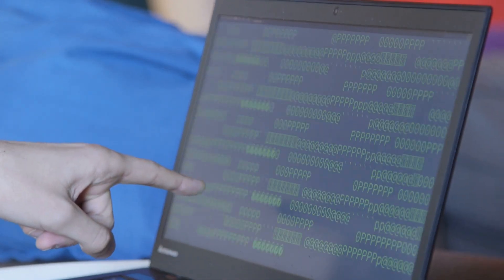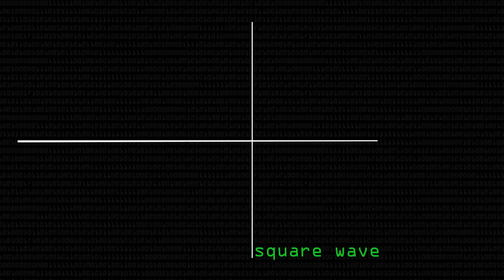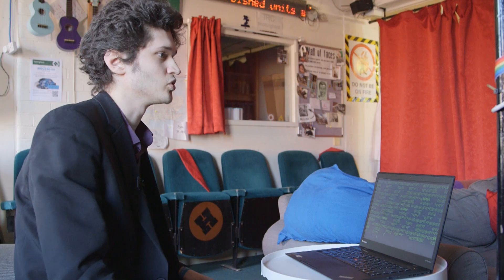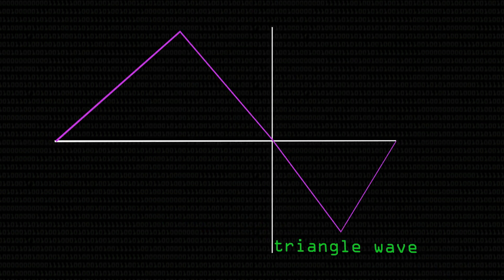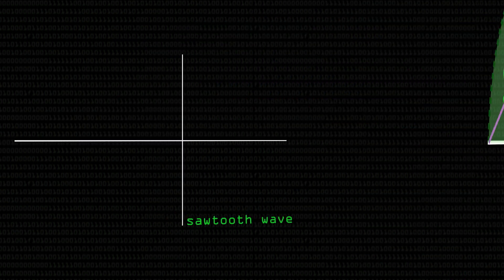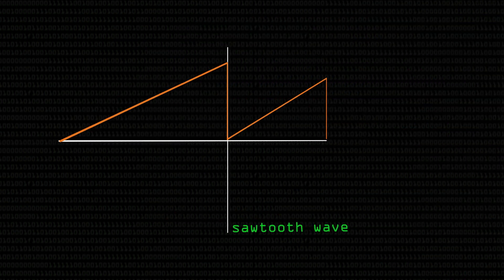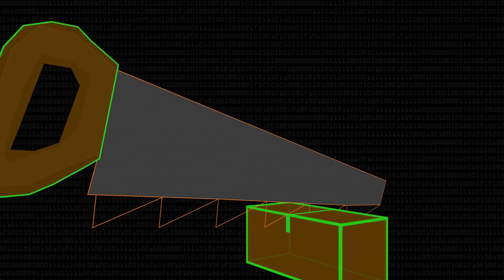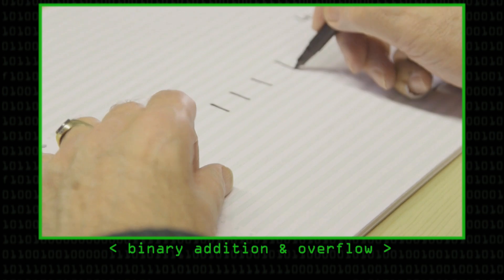In chiptune music, you tend to have a few basic waveforms that people use all the time, because they're easy to generate. One of them is the square wave, which has a particular sound you'll recognize from old-time game music. There's also the triangle wave, which sounds a bit like a sine wave but is much easier to generate. And the other one is the sawtooth wave, which goes up, up, and then jumps down. This works by sawtooth waves, because it turns out sawtooth waves are super easy to produce just by overflow.